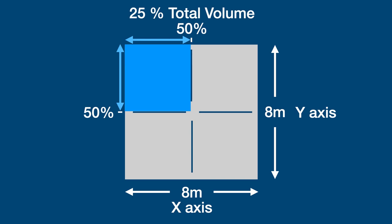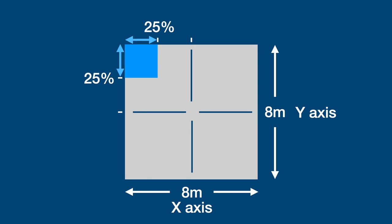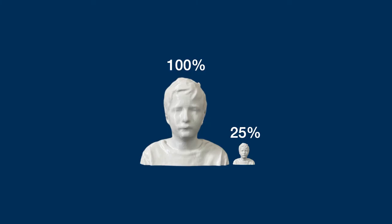If we scale it down again to 25%, this is what we get. And here's a better look. And here's what it looks like in 3D. Full-size Ethan at 100%. Knick-knack, shrunken head Ethan at 25%. Well, this looks familiar.